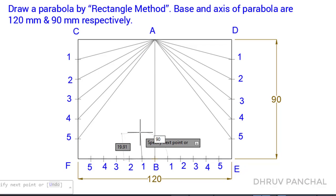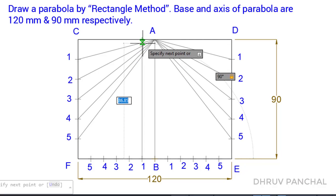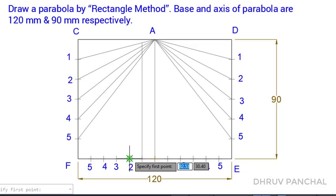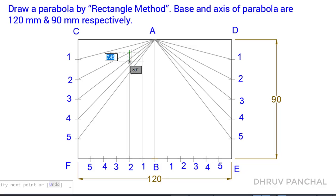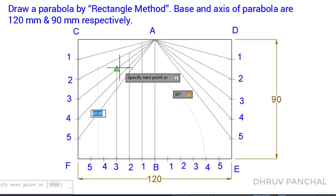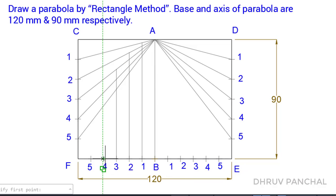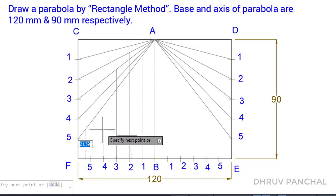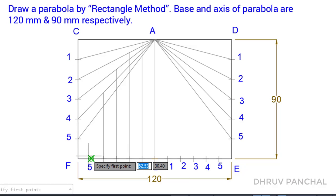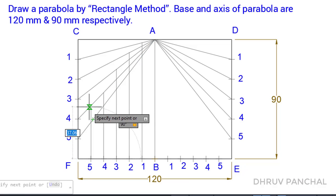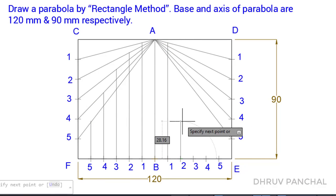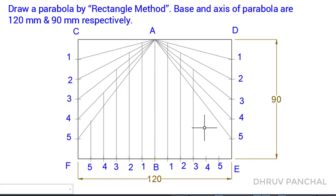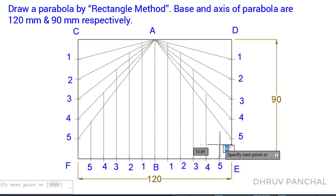From point 1 on line FB, draw a perpendicular line up to line A1; from point 2 up to line A2; from point 3 up to line A3; from point 4 up to line A4; from point 5 up to line A5. Do the same for the points on line BE as done previously.